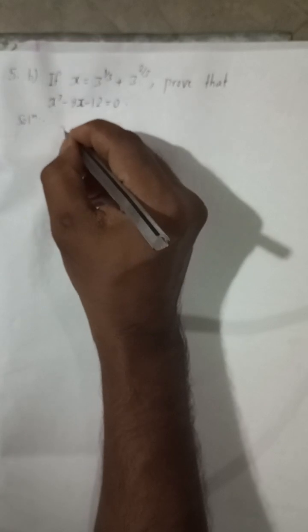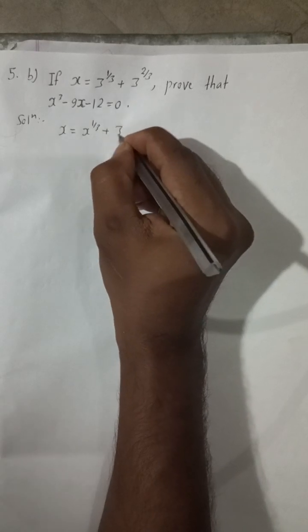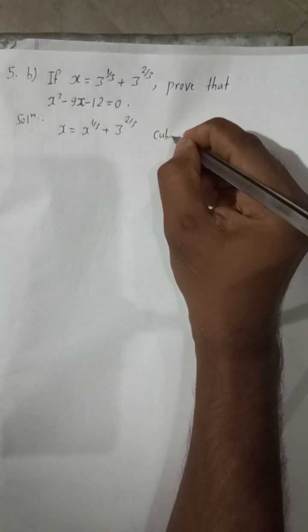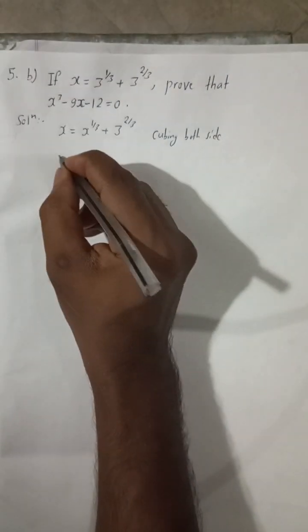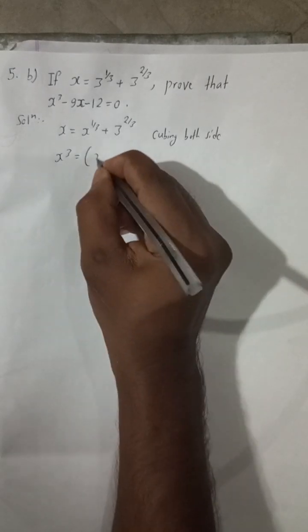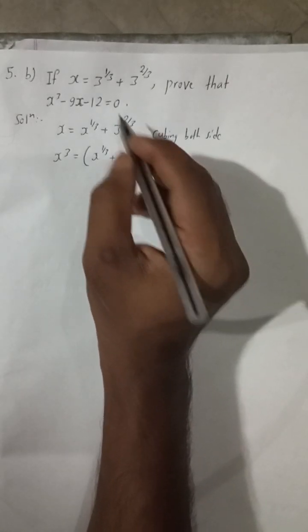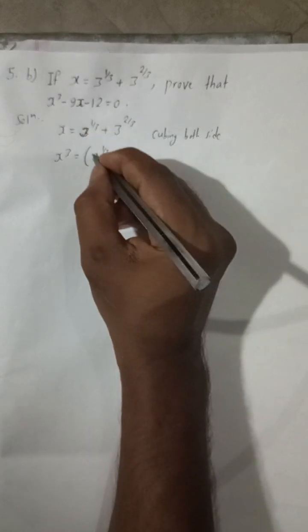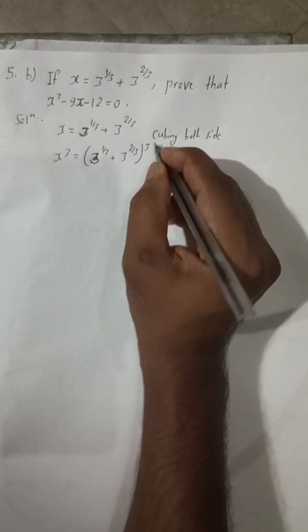So here given x is equal to 3 to the power 1 by 3 plus 3 to the power 2 by 3. Cubing both sides — note this is 3, not x — so x cubed is equal to 3 to the power 1 by 3 plus 3 to the power 2 by 3, whole cube.